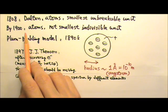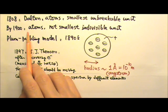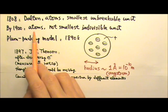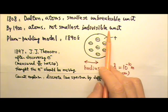By 1900, most scientists had accepted that matter was made up of atoms, but they had found evidence showing that atoms were not the smallest indivisible unit of matter.